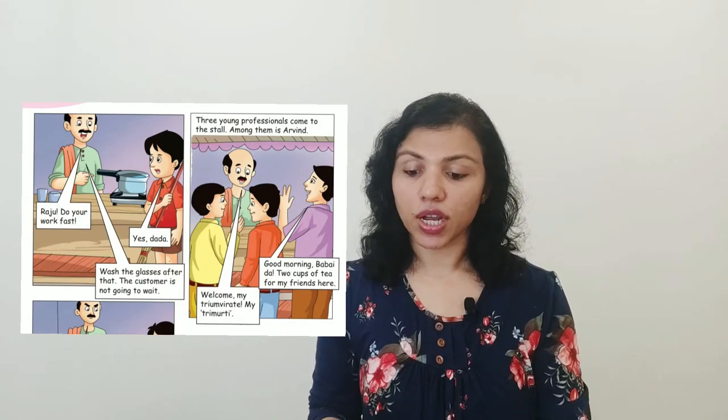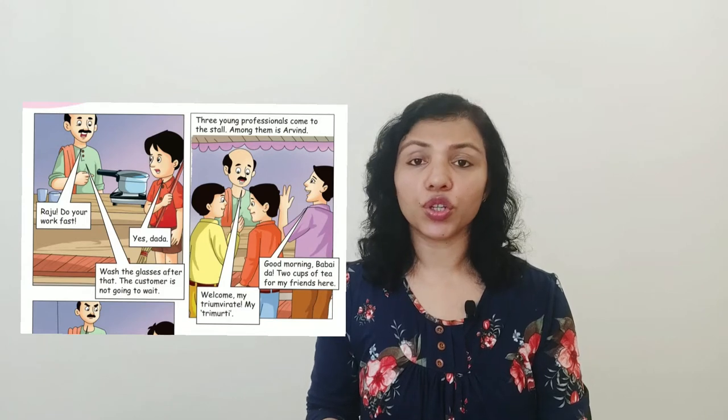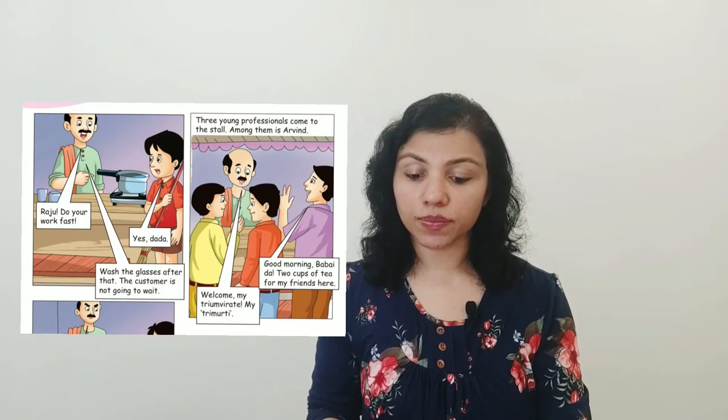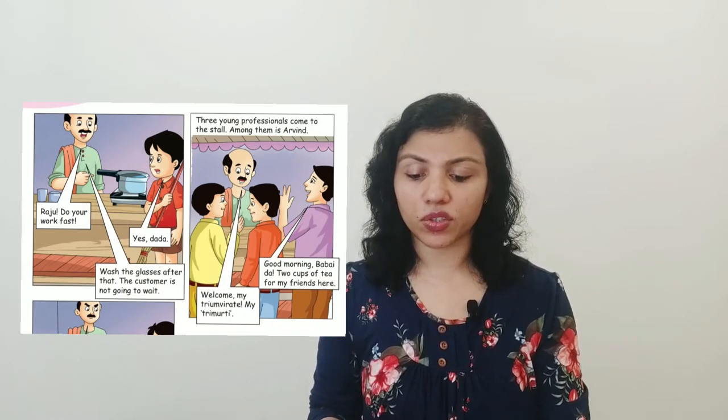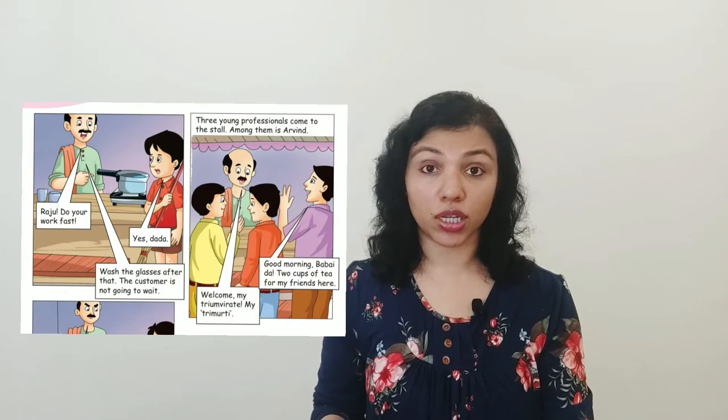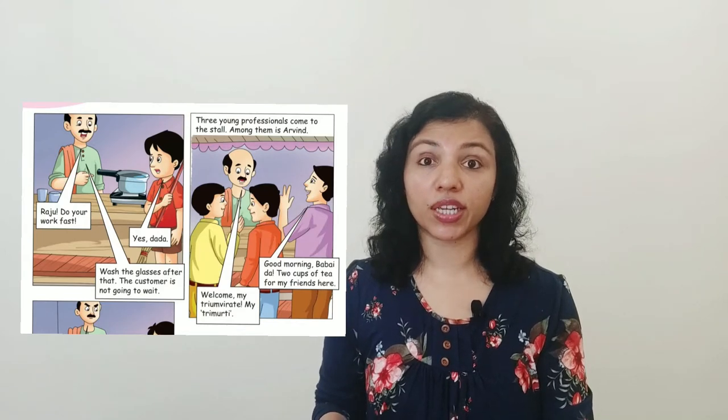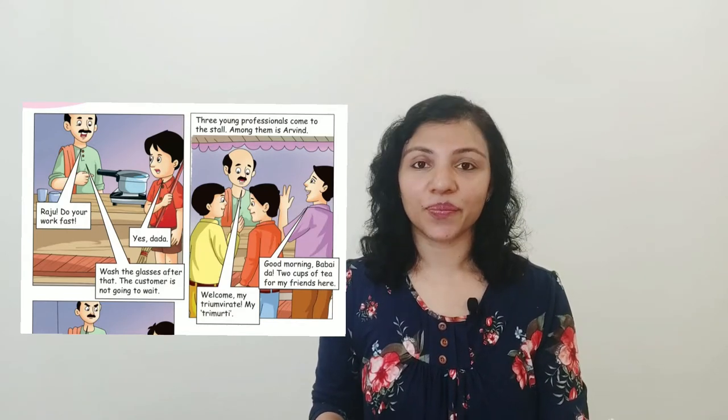On the next page, we see the employer — the owner of the tea stall — scolding Raju, saying: 'Raju, do your work fast. Wash the glasses. After that, the customer is not going to wait.' He seems like a very strict person, and Raju has to get back to work. He cannot just stand outside cleaning the pavement, looking at the kids and thinking about how his life could have been different.